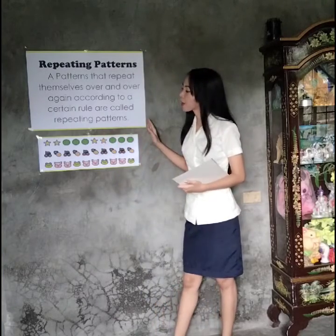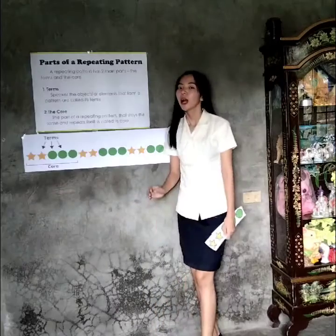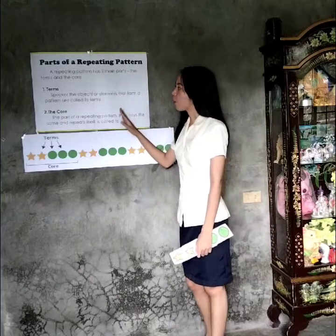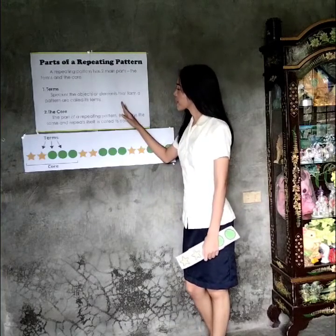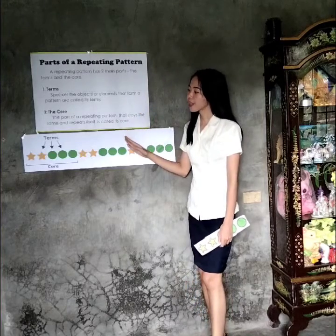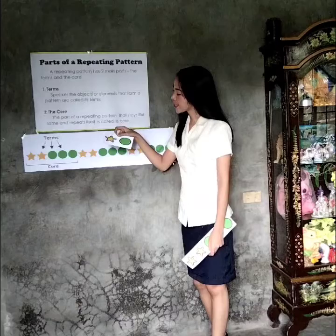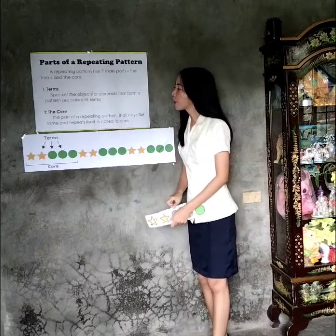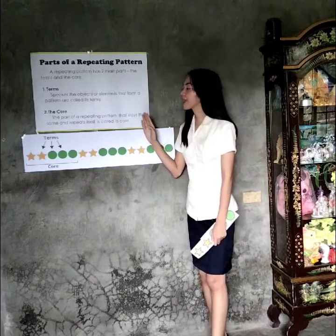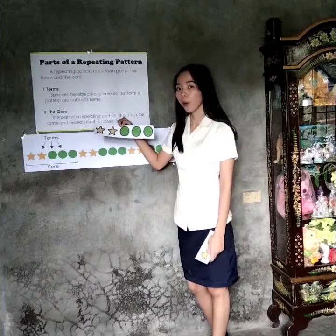Some examples of repeating patterns are shown here. A repeating pattern has two main parts: the terms and the core. The terms are the objects or elements that form a pattern. In the example above, the terms are orange stars and green circles. The core is the part of the repeating pattern that stays the same and repeats itself.